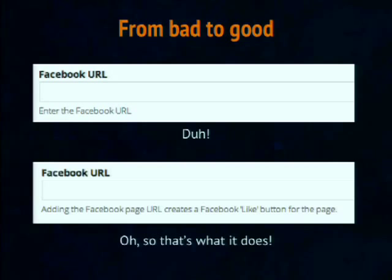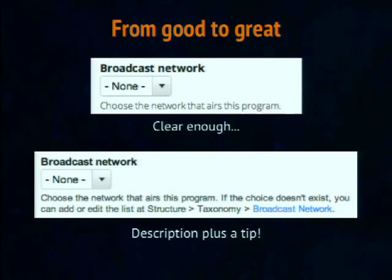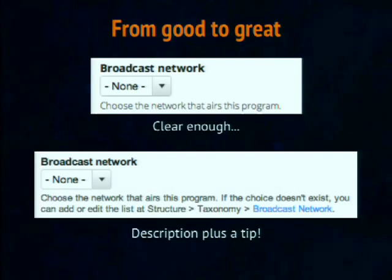Another example: for a field called 'broadcast network' with a select list, average help text would say 'choose the network that airs this program.' Better help text adds: 'if your choice doesn't exist, you can add or edit the list at this link' — and you can actually provide the link to the page they need to go to. As long as you're not forcing them to take an extra step of going somewhere else to find out — whether calling you or looking up documentation — you're saving time both for them and for you.